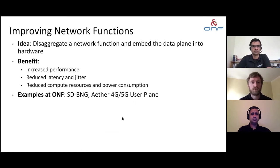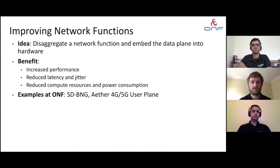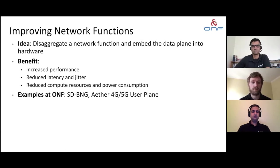The next thing P4 does is improve network functions. Cloud operators have realized that all functions like firewalls and load balancers were first virtualized, which solved some problems but created others. P4 is helping solve the problem that virtual network functions or container network functions have created. The first idea is to disaggregate network functions, and the second is to take the data plane portion and put it onto hardware. Benefits operators are seeing include increased performance and throughput, reduced jitter and latency, and reduced compute resources and power consumption for the same network loads.